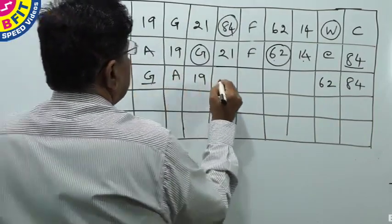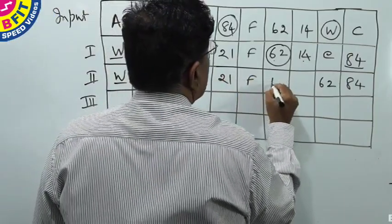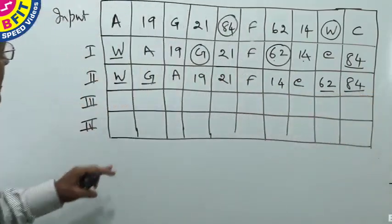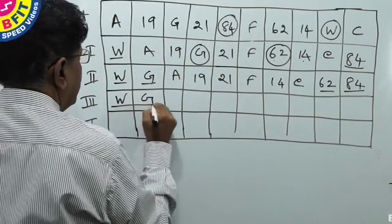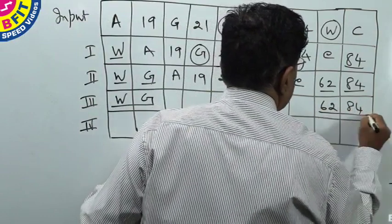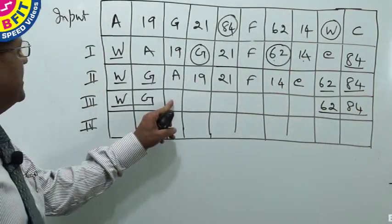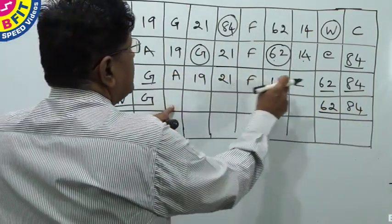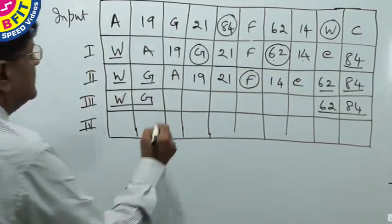The remaining after shifting is: A, 19, 21, F, 14, C. Step 3 — we shall first inherit W and G. Then 62 and 84 are inherited. Now what should come here? An alphabet lower than G. We have A, F, C. So F is the alphabet and it will come here.